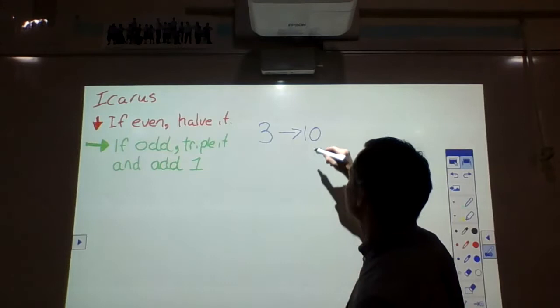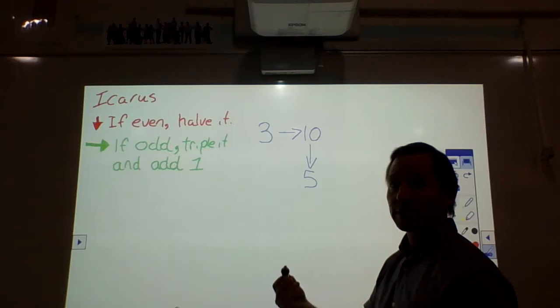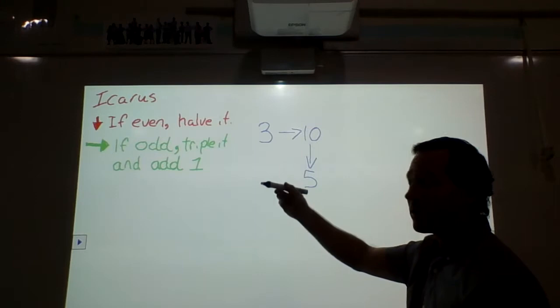Now, is it odd or even? It's odd. So, what do we do? We triple it. We times it by three and we add one. Which gives us... Oh. Woo. Goes this way. Sixteen. Sixteen. Odd or even? It's even.